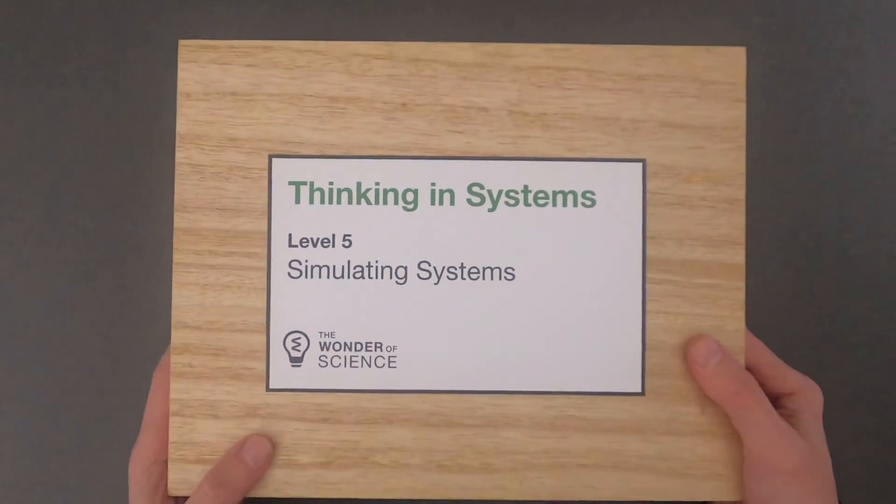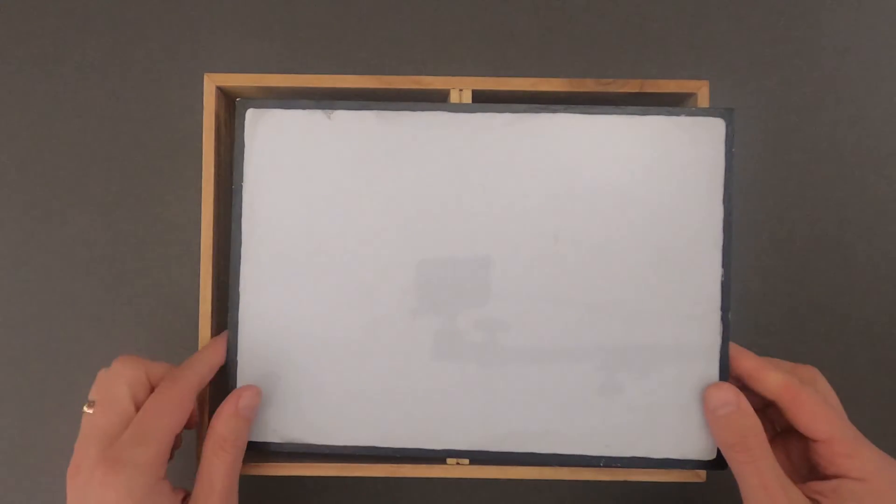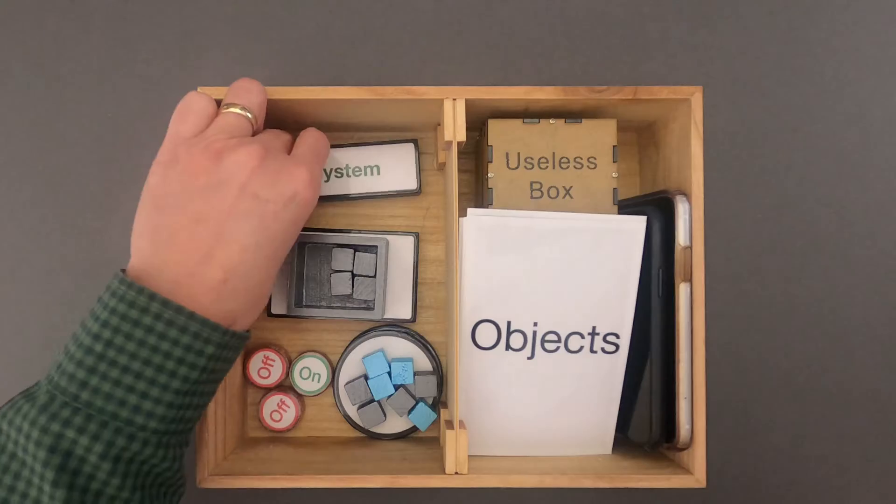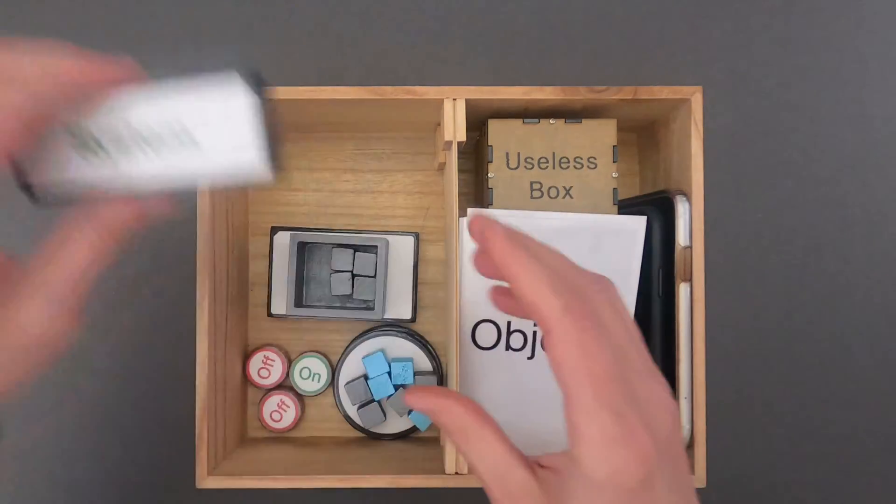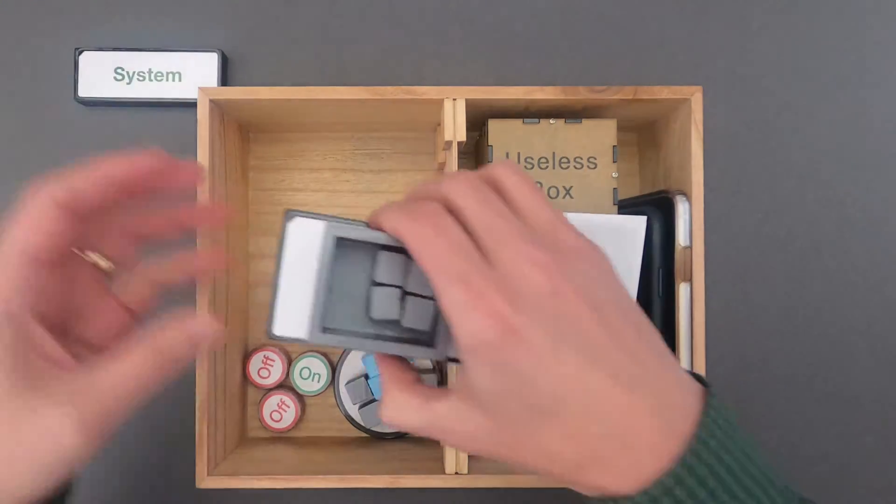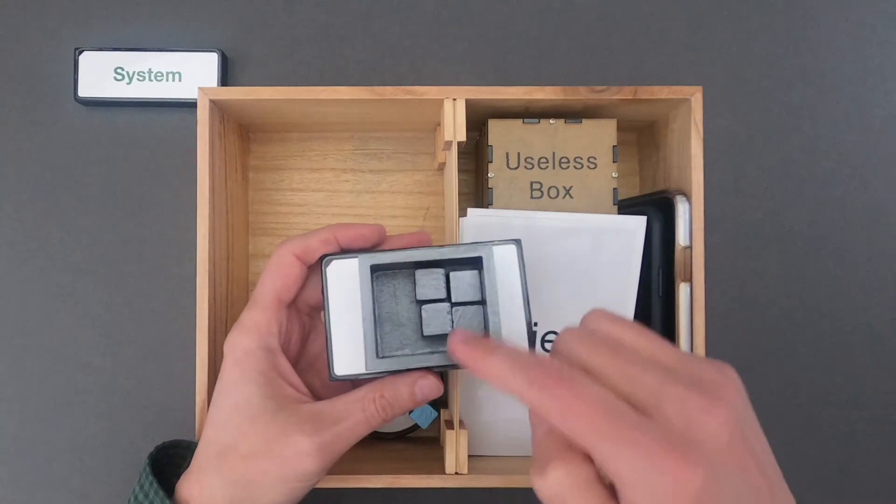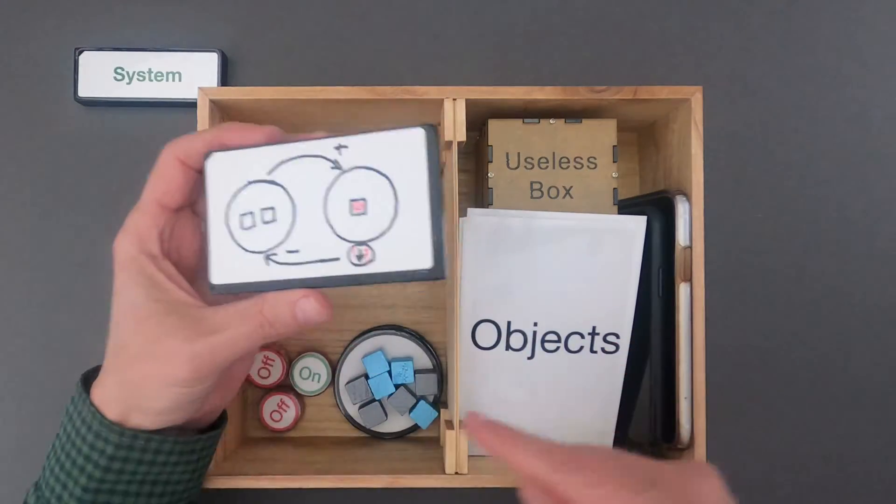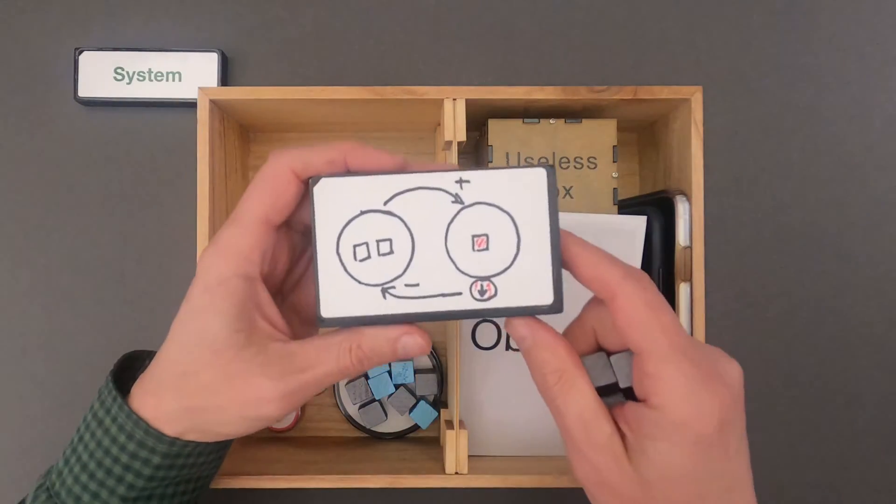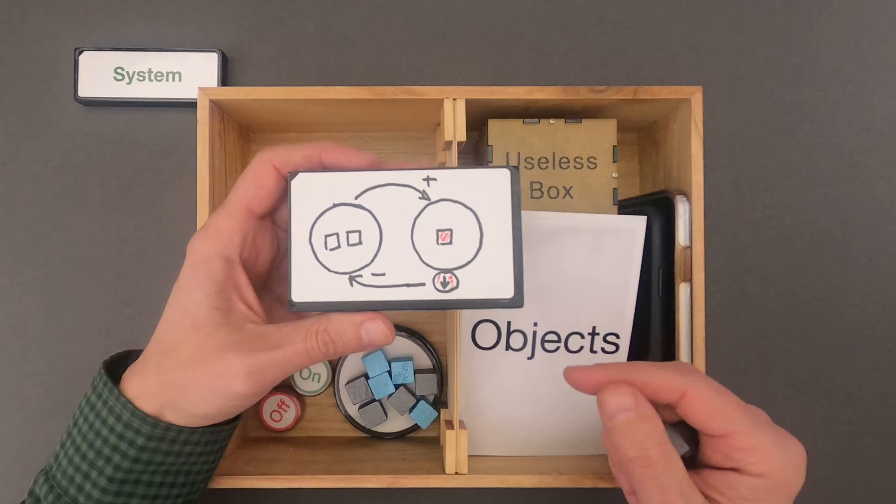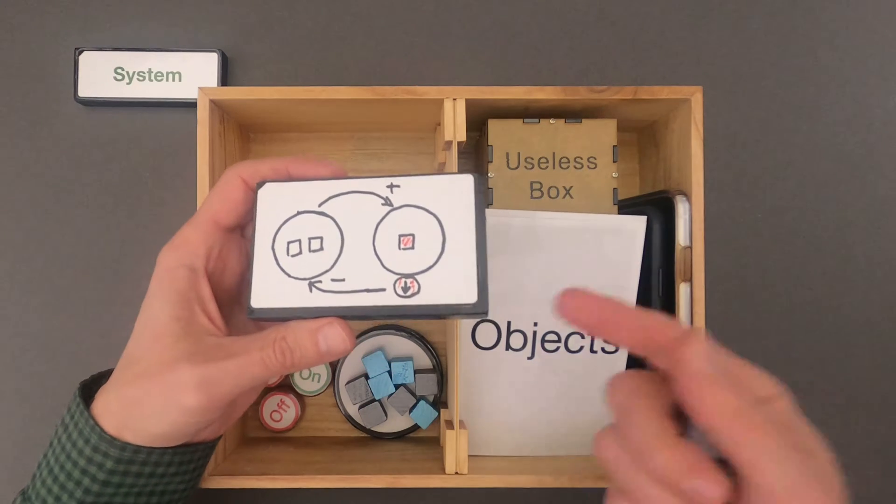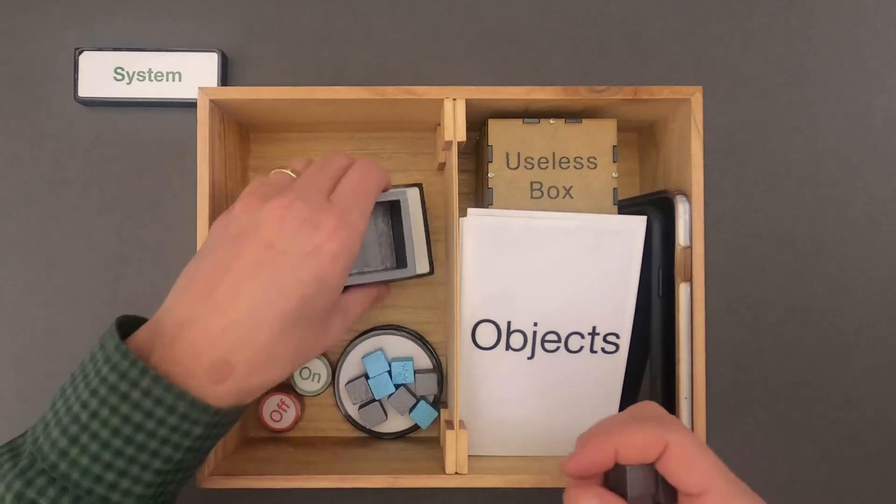Hi, it's Mr. Andersen and this is Thinking in Systems Level 5, Simulating Systems. In this video I'm going to show you how to create a simple physical simulation of a system. Up to this point we've always defined the system to start and we'll continue doing that. A system, remember, is a group of components that are interacting together. What will make this video different is that we're going to try to use a series of buttons, switches, and cubes to create a simulation. A simulation is simply a set of logical rules that we can put at play and see how the system operates over time.